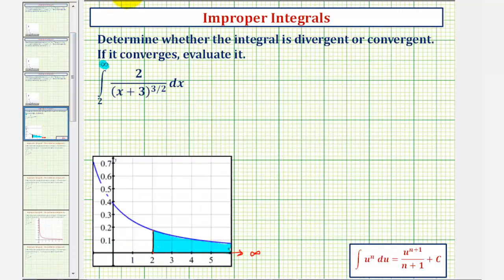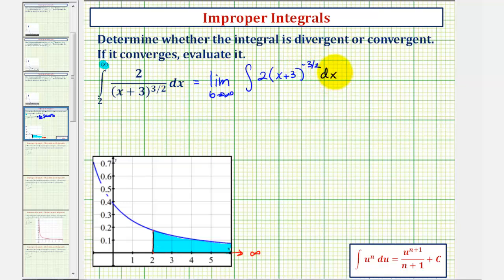So going back to our example, we'll write this as the limit as b approaches infinity of the integral of, let's write this as two times the quantity (x + 3) to the negative 3/2 power, integrated with respect to x from 2 to b.